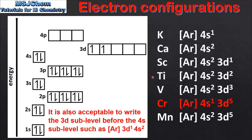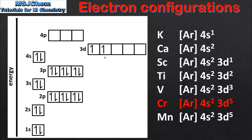Next is titanium which is Ar4s2 3d2. As we saw previously, when we have degenerate orbitals we need to fill each orbital singly before putting in a second electron, so the second electron goes into the next available empty orbital. The next element is vanadium which is Ar4s2 3d3, and the third electron goes into the next available empty orbital.